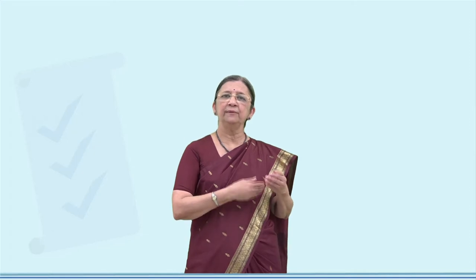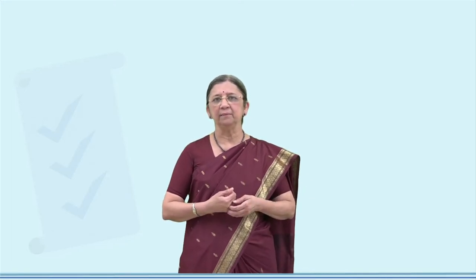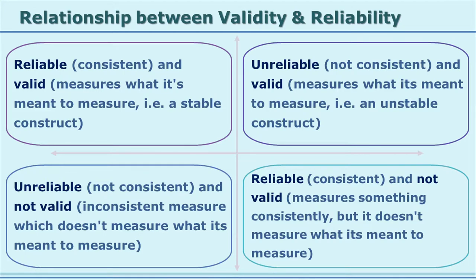Now that we have seen reliability and validity, we know that if a tool is measuring what it is supposed to measure, it is valid. And if you can rely on it — it gives the same results again — that is reliability. There are four quadrants in the relationship between these two: a tool can be reliable and valid; unreliable and not valid; reliable but not valid; or unreliable but claimed to be valid. If a tool is not consistent, it cannot measure what it is supposed to, and that is why it gives two different results at two different times.